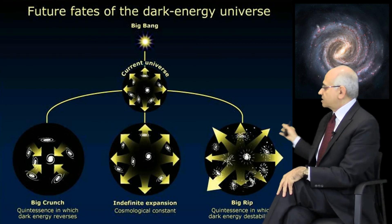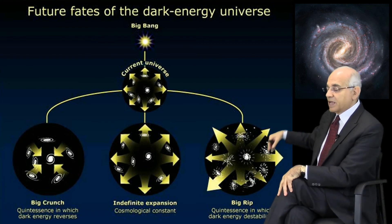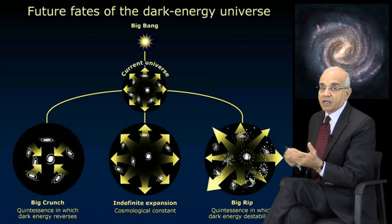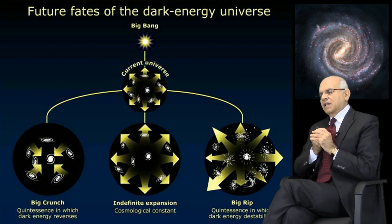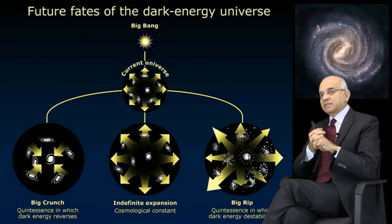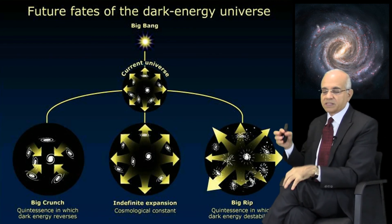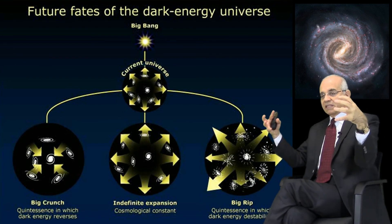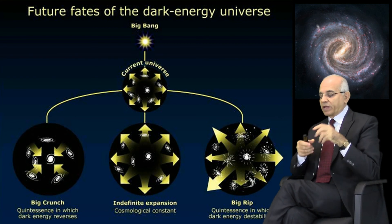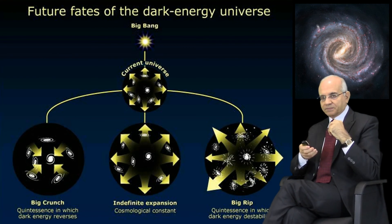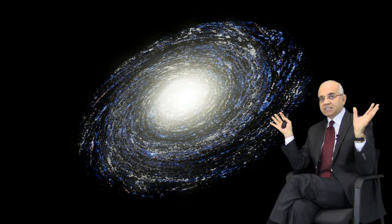So there's a Big Crunch, there's a scenario of continued expansion indefinitely, and there's a scenario of the Big Rip. It seems that a lot of astronomers, based on their calculations, believe the universe will end up with the middle scenario — it will continue to expand indefinitely. There will come a point when intelligent beings on a galaxy will look up in space and see nothing else, only their own galaxy, not any other galaxy at all.